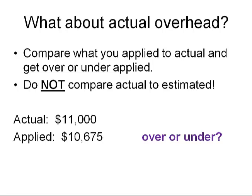We applied $10,675 to those four jobs. Now we compare what was actually spent to what we applied. Actual overhead was $11,000 and we applied $10,675. So did we apply too much or not enough? We didn't apply enough — that's called under-applied. We do not go back and fix what was assigned to the job. At the end of the period, after all the jobs have gotten overhead assigned to them, any difference between actual and applied — and there's almost always a difference because the predetermined overhead rate is just based on estimates — we would adjust the difference directly to cost of goods sold.